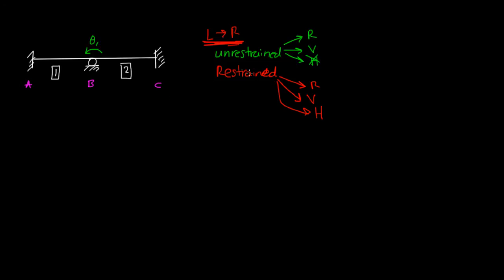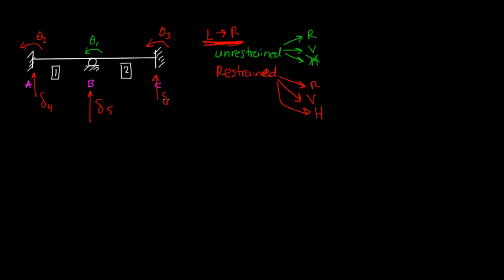Now we move on to restrained degrees of freedom, starting from the left, doing rotations first. At A, we have a restrained rotational degree of freedom — I'll call that theta 2. Joint B's rotation is already accounted for. At joint C, we write theta 3. Then we move to vertical restrained degrees of freedom. At A, that's delta 4; then delta 5 and delta 6 at B and C respectively. This structure has 6 degrees of freedom.